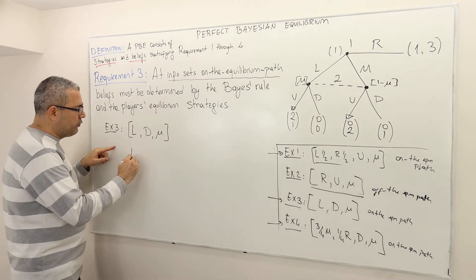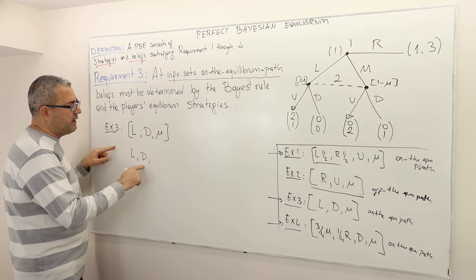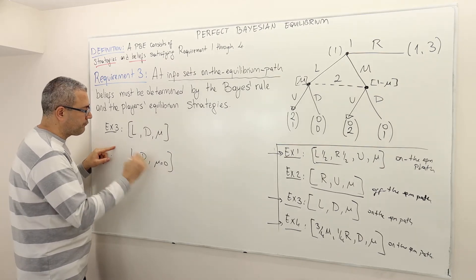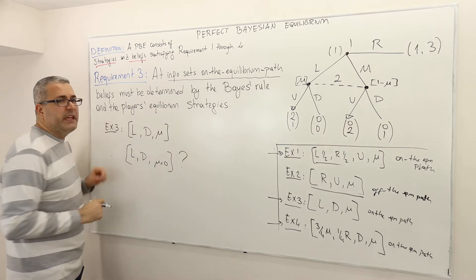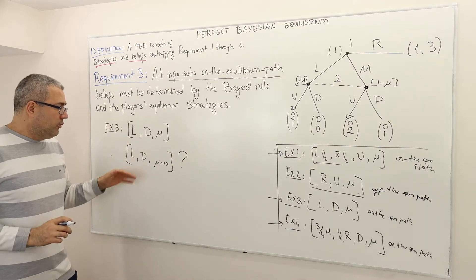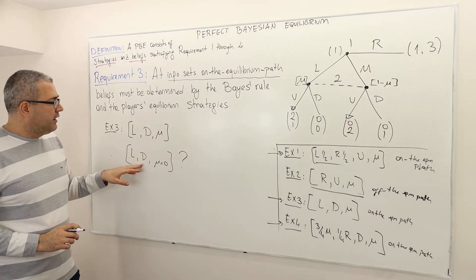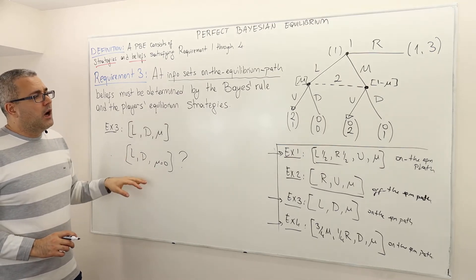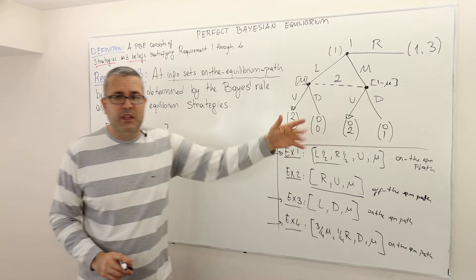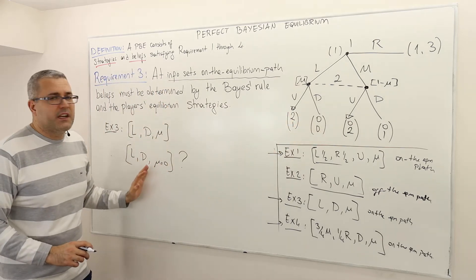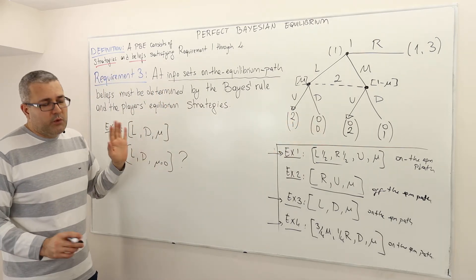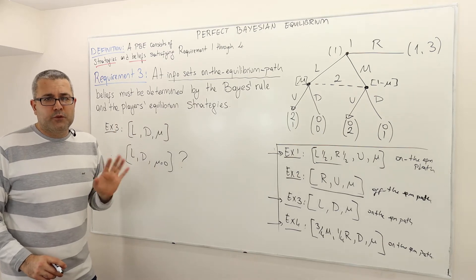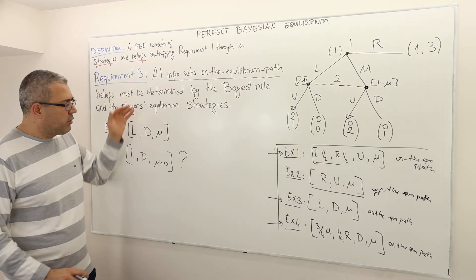Can strategy profile LD with belief mu equal to zero be an equilibrium? Well, we have to check that D is a best response to mu equals zero. In this example it is not, so it fails to satisfy requirement two — but let's ignore requirement two for now and look at requirement three.